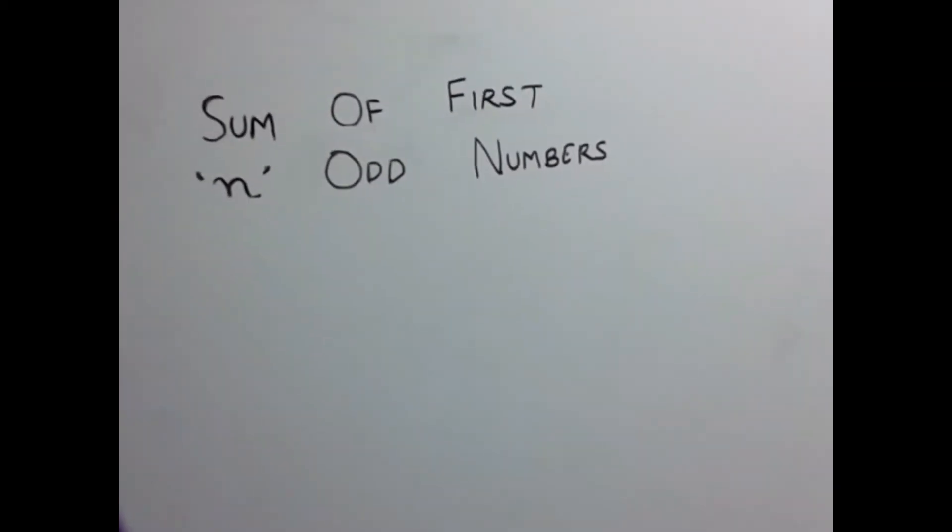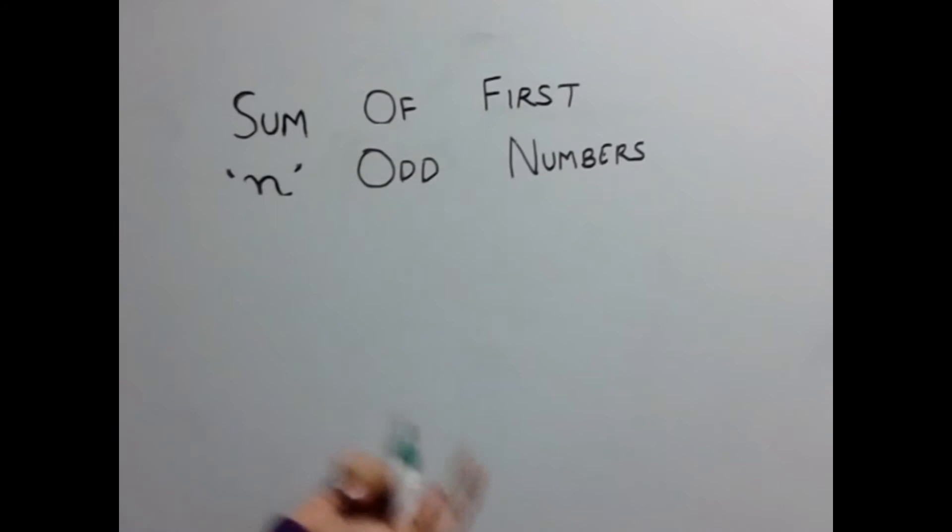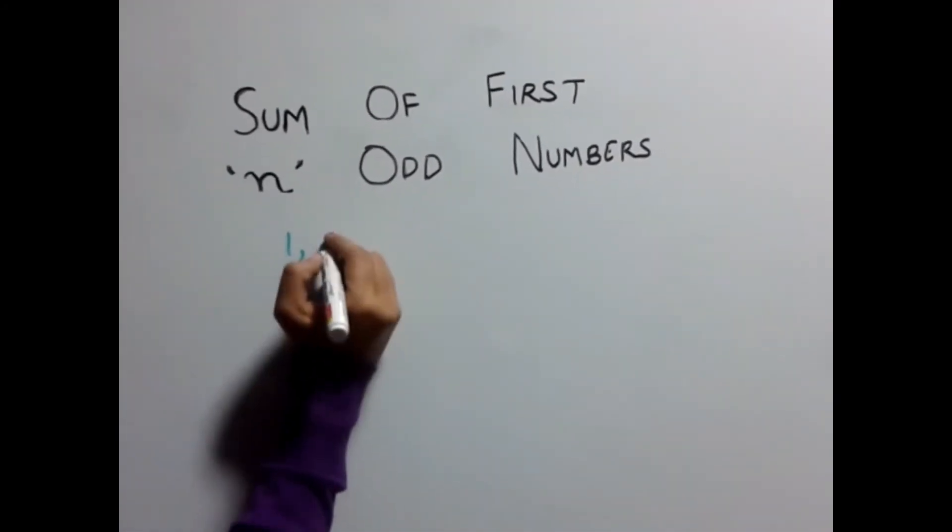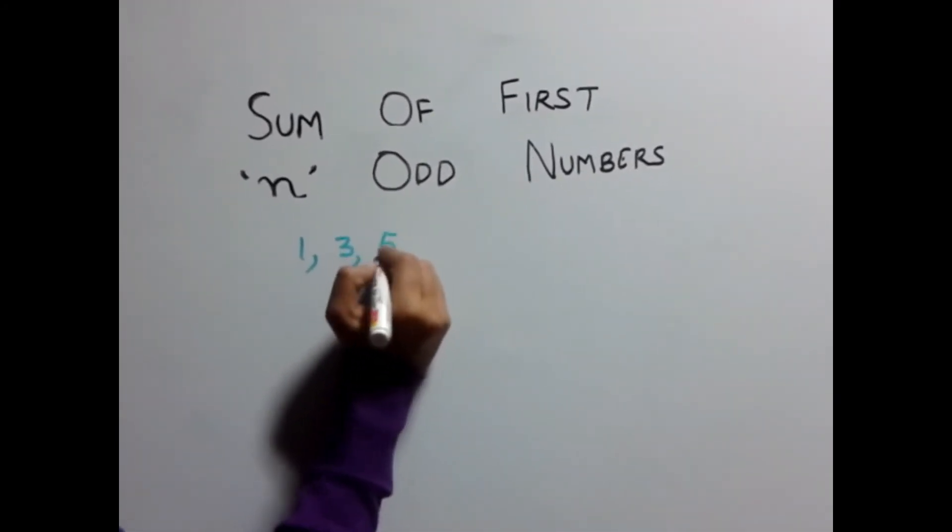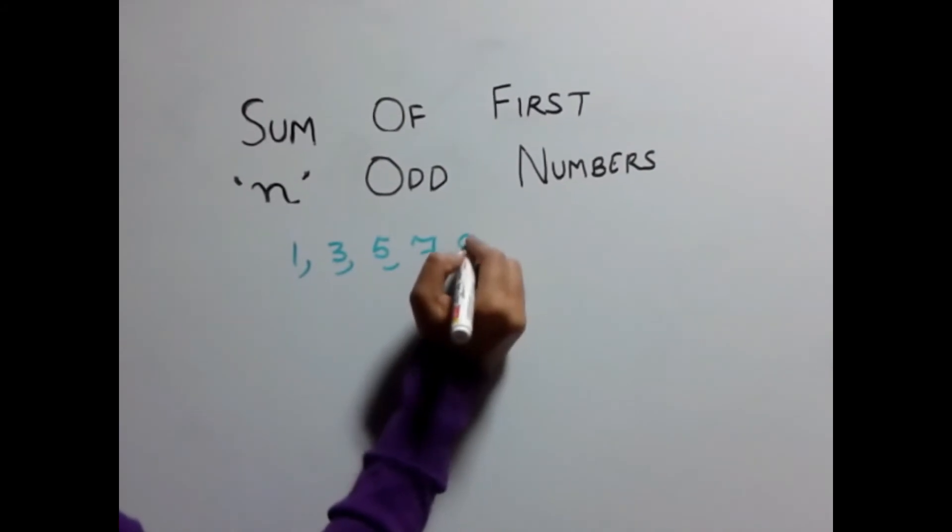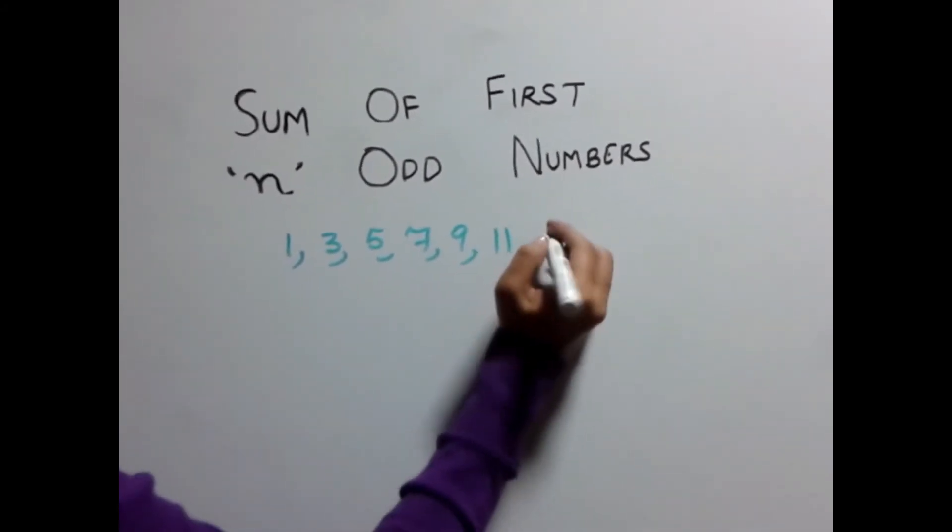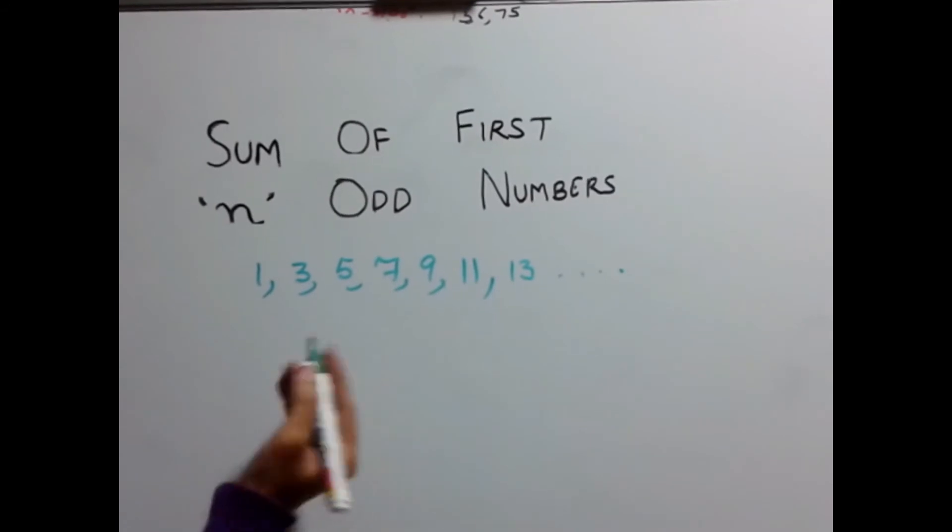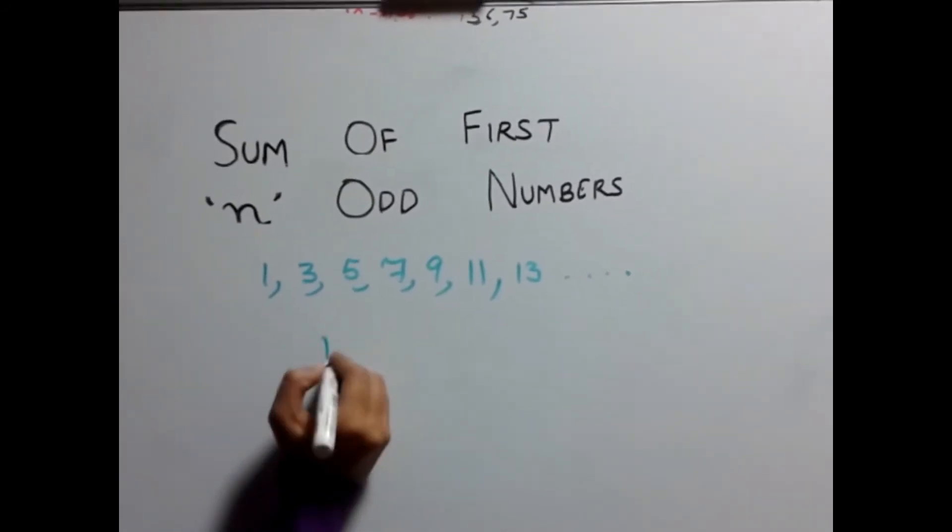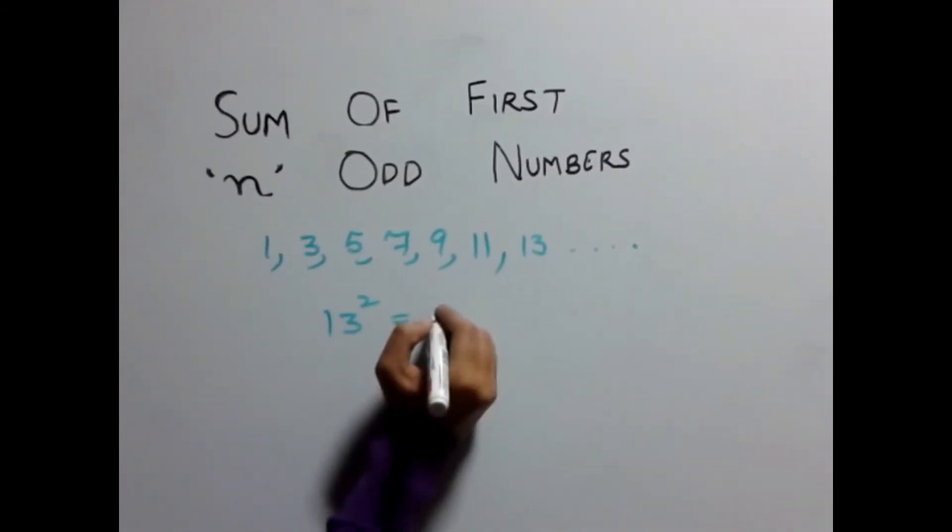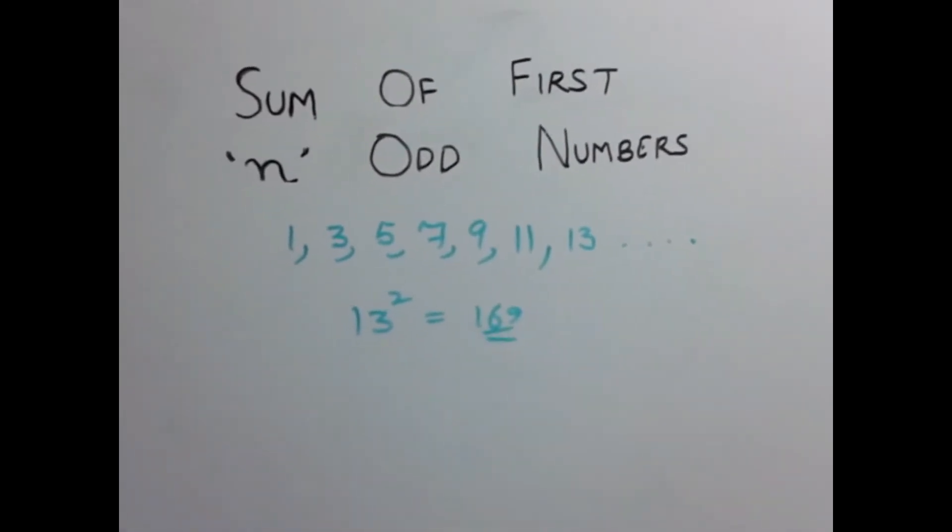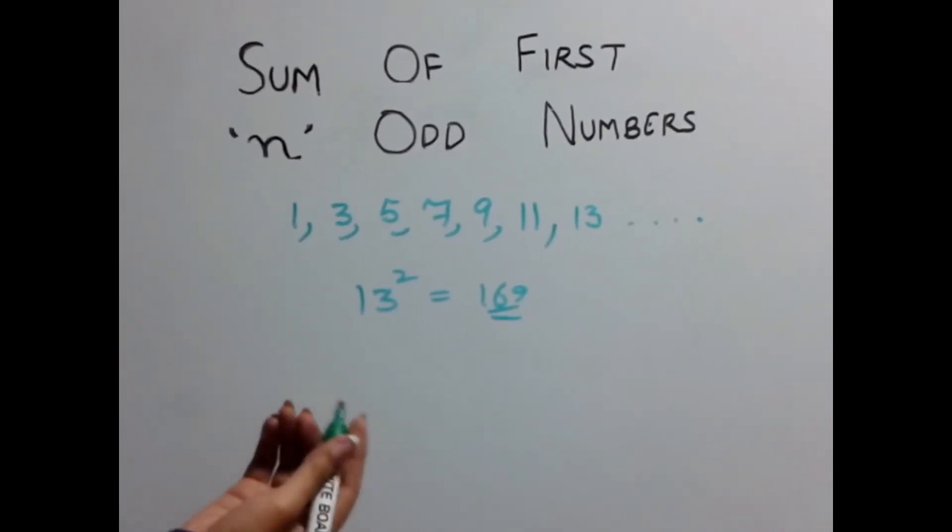If you need to sum up first 13 odd numbers, first 13 odd numbers would be 1, 3, 5, 7, 9, 11, 13 and so on. You just need to square them which gives you 13 squared as 169 as the answer.